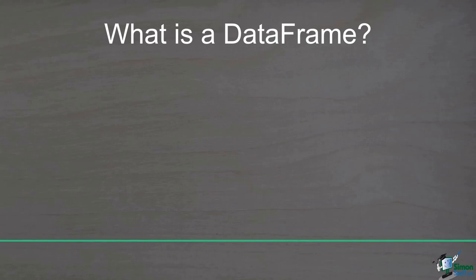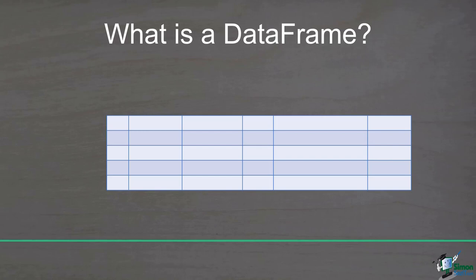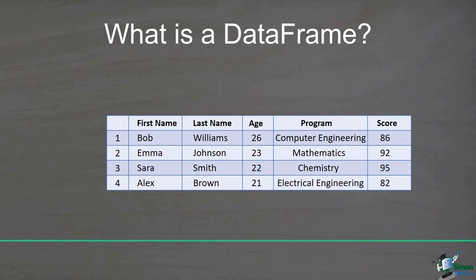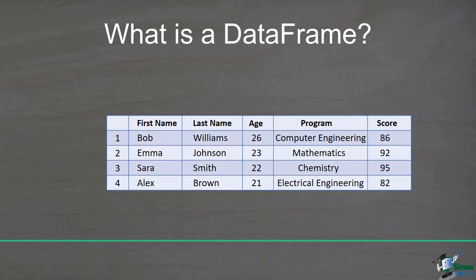Assume you are a teacher and want to store student data in a table. You design a table with columns for first name, last name, age, program, and score. Each row represents a student — for example, Bob Williams, 26 years old, studying computer engineering, with a score of 86. This is exactly what a DataFrame is. This DataFrame has five columns and four rows.